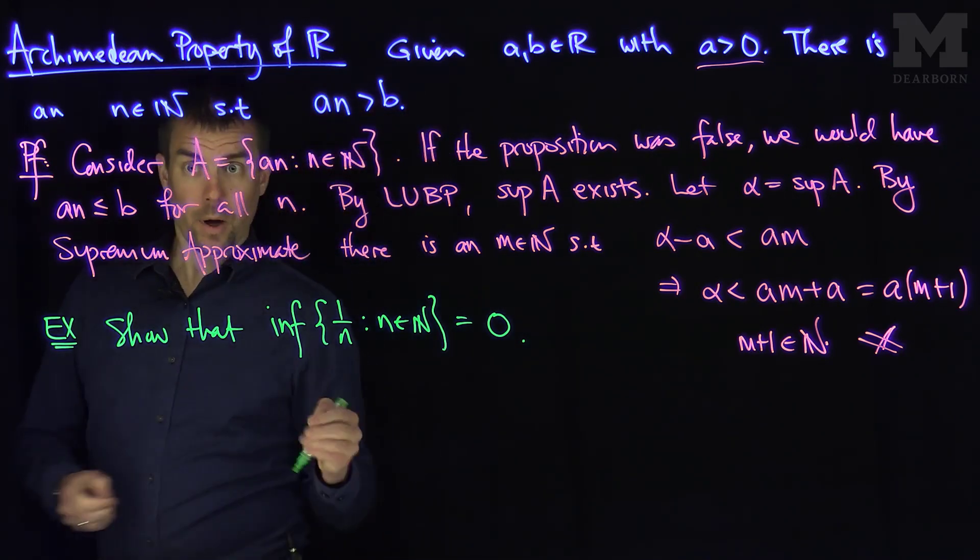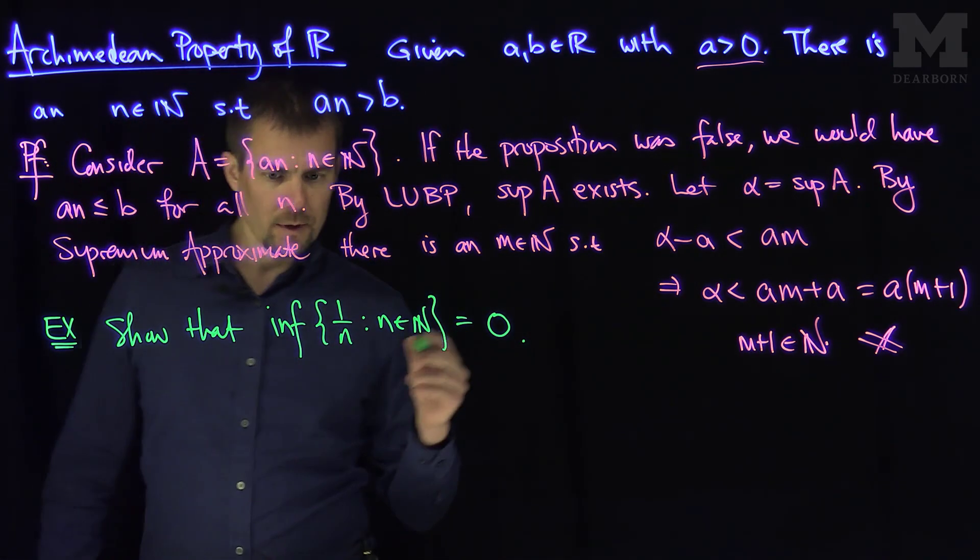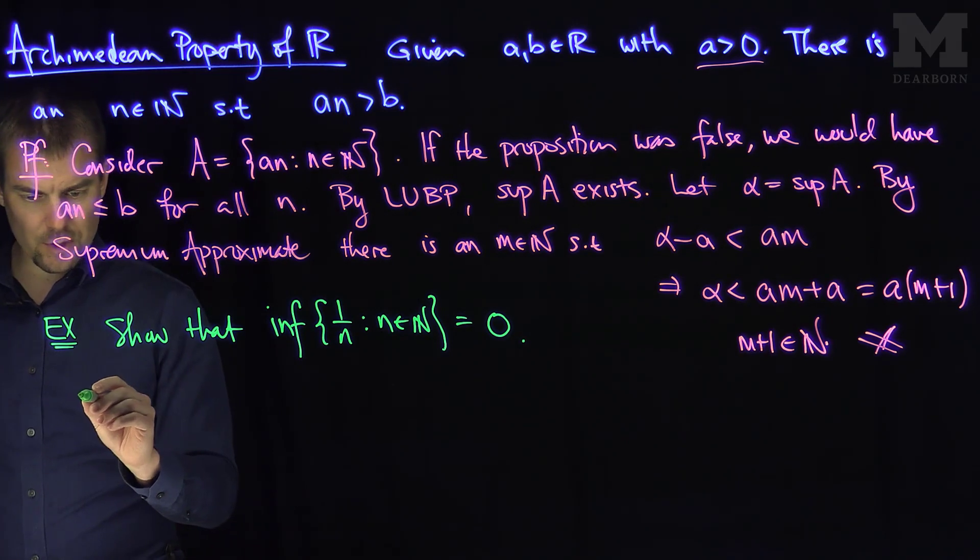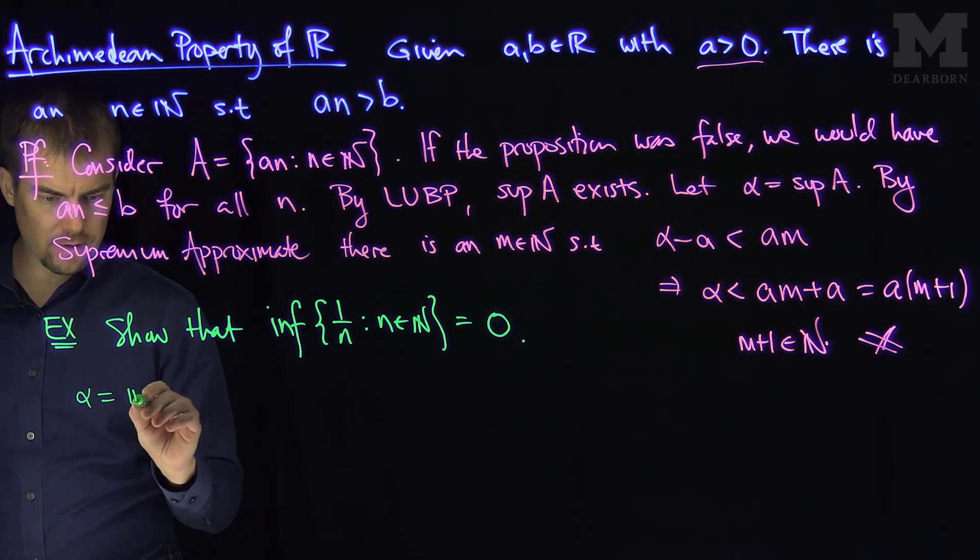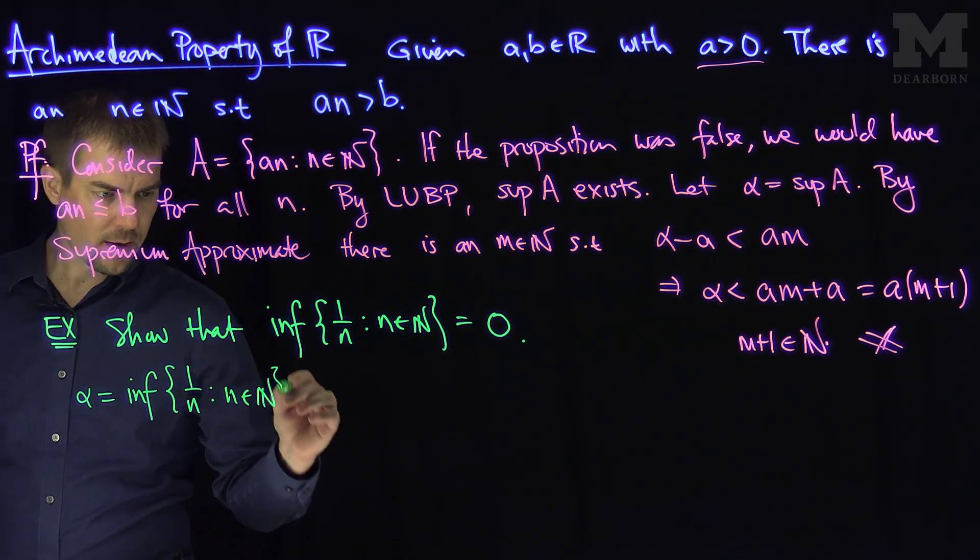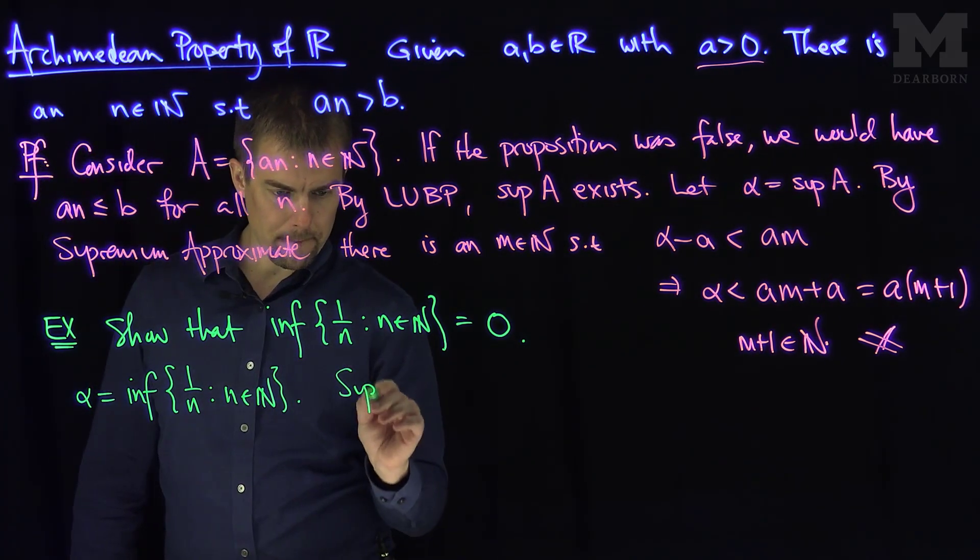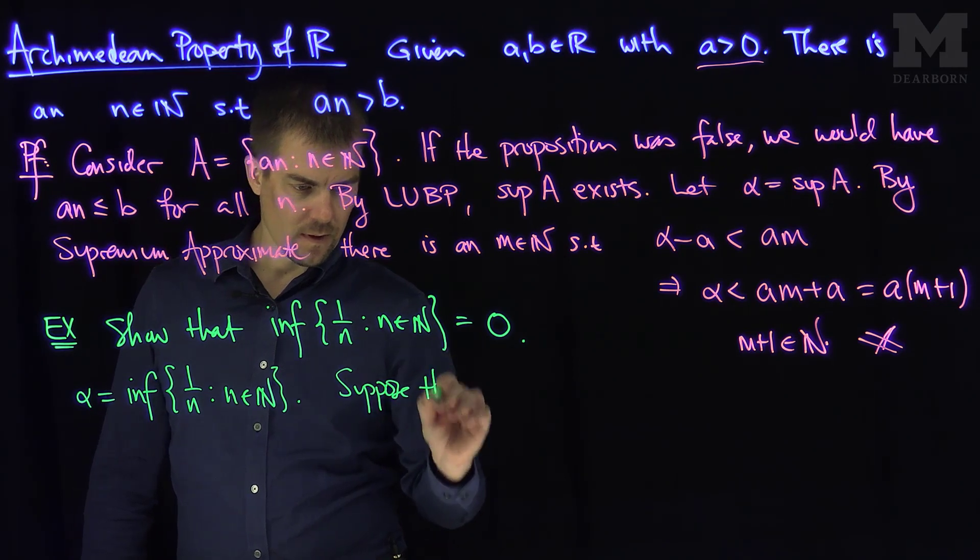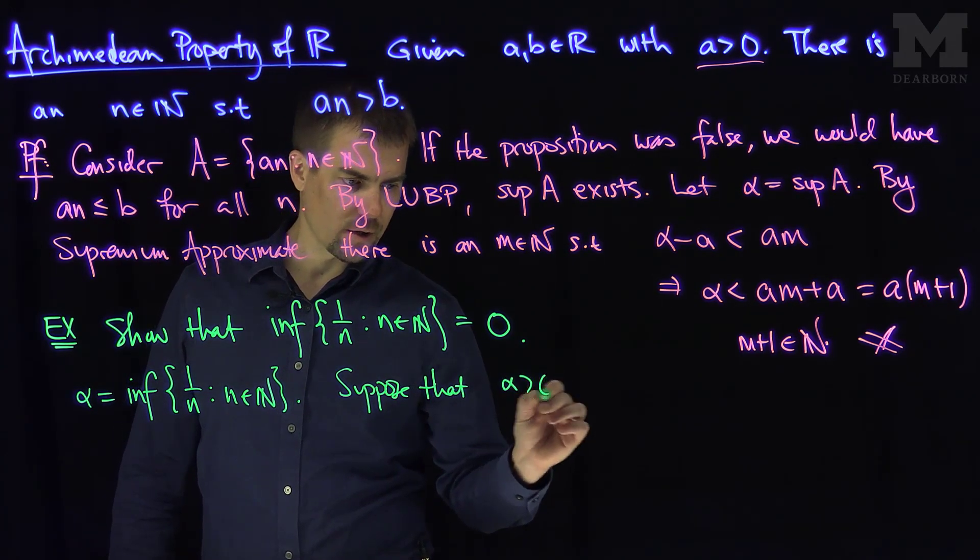So what we can do is, clearly the infimum exists, so let's call alpha the infimum of the set one over n, and let's suppose that alpha is greater than zero.